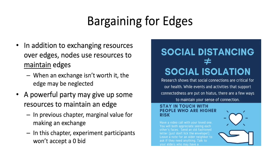This bargaining stuff actually applies to the actual maintenance of an edge. We put in an edge because we want to exchange resources over it, but maintaining the edge itself also requires resources. If you never use the edge, eventually it disappears — no one's going to talk to you anymore because you keep ignoring them. If the exchange isn't worth it, the edge will decay. A powerful party may give up some resources just to maintain an edge and keep the other person interested.